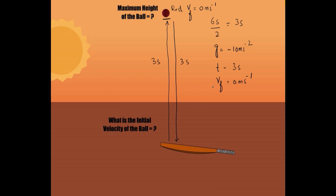We know the final velocity is 0 meters per second because the ball is at rest when it reaches the maximum point. We know the time and we know the gravitational acceleration. We can use the first equation of motion: Vf = Vi + At. Because the object is moving against the field of gravity, we replace acceleration A with gravitational acceleration g.